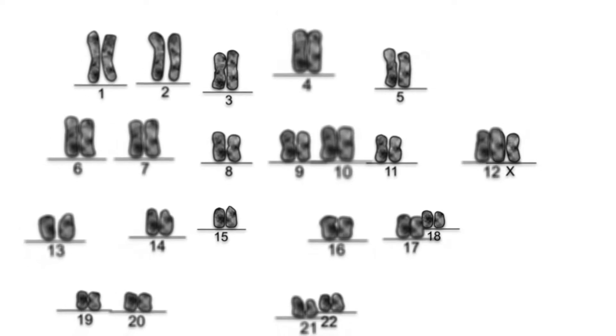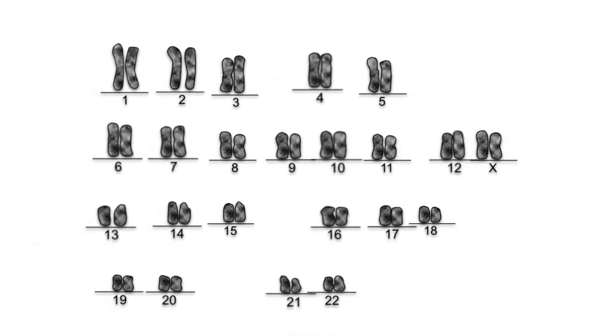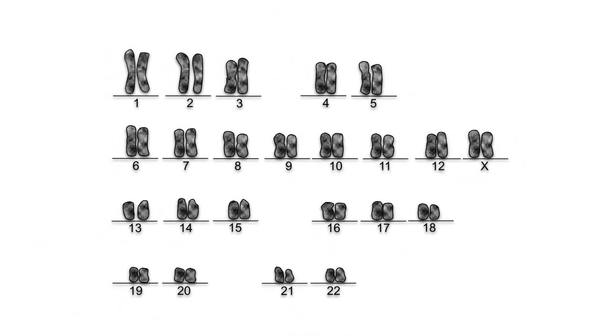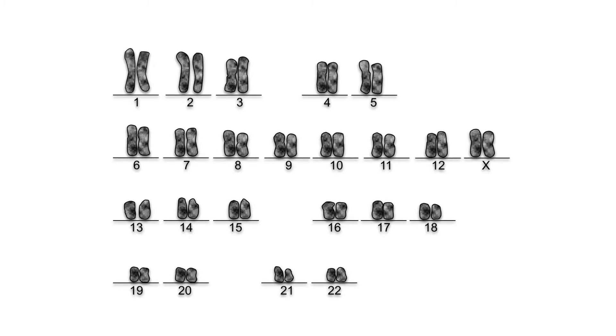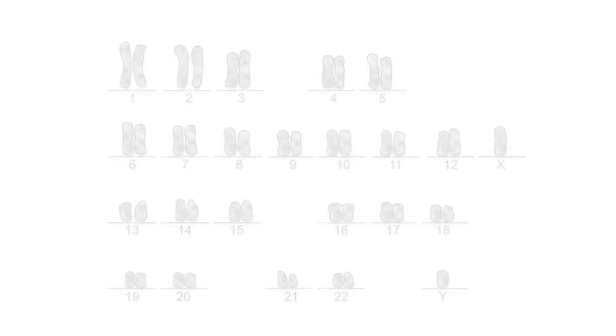By means of light microscopy, chromosomes can be observed during the metaphase of a mitosis. The chromosomes of a cell can be arranged in a numbered sequence according to size and presented in what is called a karyogram. Here you see a normal karyogram of a woman with two X chromosomes.